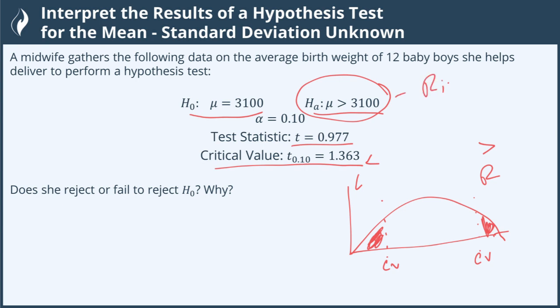The key to the test statistic is we call this region over here the rejection region. If our test statistic falls in here, we reject. In our case, the CV is 1.363.